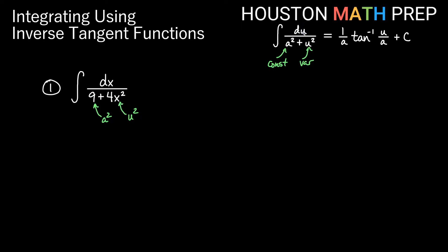Notice up here I also need a du to make this exactly into the definition we have here, so I'll need to figure that out. Let's go ahead and write down what we have though. If a squared is 9, that tells us that a is 3. And if u squared is 4x squared, just be careful here, that means u is 2x because 2x times itself gives us 4x squared. So that would be u squared.